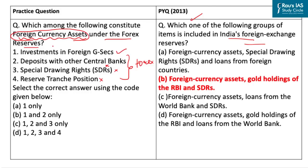We need to understand the difference: foreign currency assets include foreign currency, investment in foreign G-Secs, deposits with other central banks, and deposits with overseas branches of commercial banks. However, it excludes monetary gold, SDR holdings, and reserve position in the IMF, as these are part of the broader forex reserve. It is also important to note that forex reserves do not necessarily lie in the same country — investment in foreign G-Secs and deposits with other central banks also form part of forex reserves. The correct answer is option A — only statement 1 is correct.